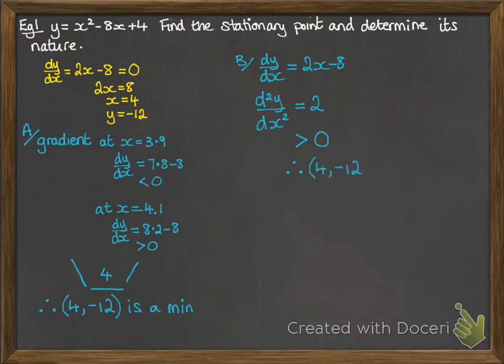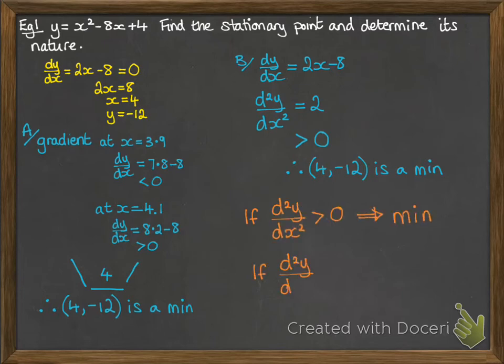Now, when the second derivative is greater than 0, that means that you get a minimum. So here's the note that you need on that. If the second derivative is greater than 0, you get a minimum. If it's less than 0, you get a maximum.